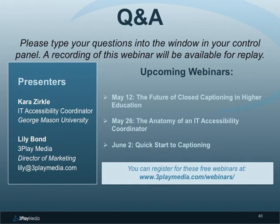Another question: since GMU uses multiple vendors, how do you consolidate data to track hours of video captioned, cost, and requests? That can go to Courtney Shewalk, our Accessible Media Coordinator. When we are charged, it's based upon minutes, which makes it easier to track. We also keep everything in an internal database within our office, so we can track all of that information and get a lot of it from our internal records.